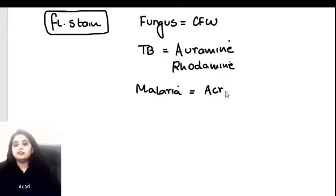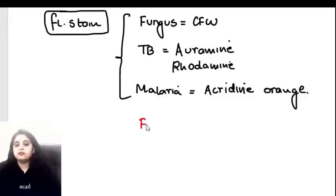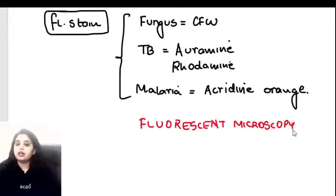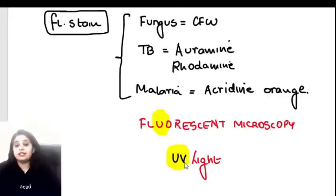For malaria, the fluorescent stain is Acridine Orange. If you're using fluorescent stains, the microscope used in the lab is going to be a fluorescent microscope. The light used in a fluorescent microscope is ultraviolet light - a fluorescent microscope utilizes ultraviolet light.